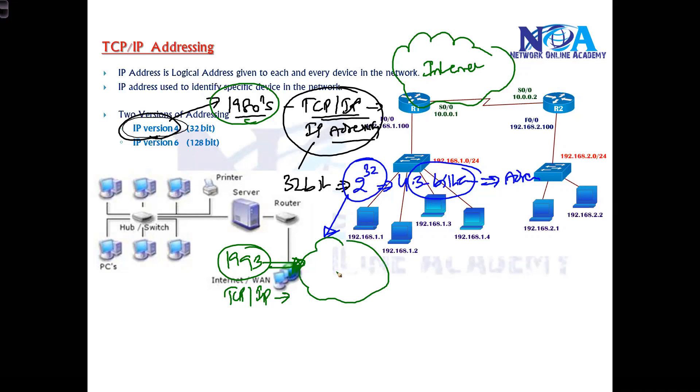Because the internet works on TCP/IP protocol, and because of the growth of the internet and the number of devices connecting to the network, they realized there would be a shortage of IPs. So they started working on a new version called IP version 6.